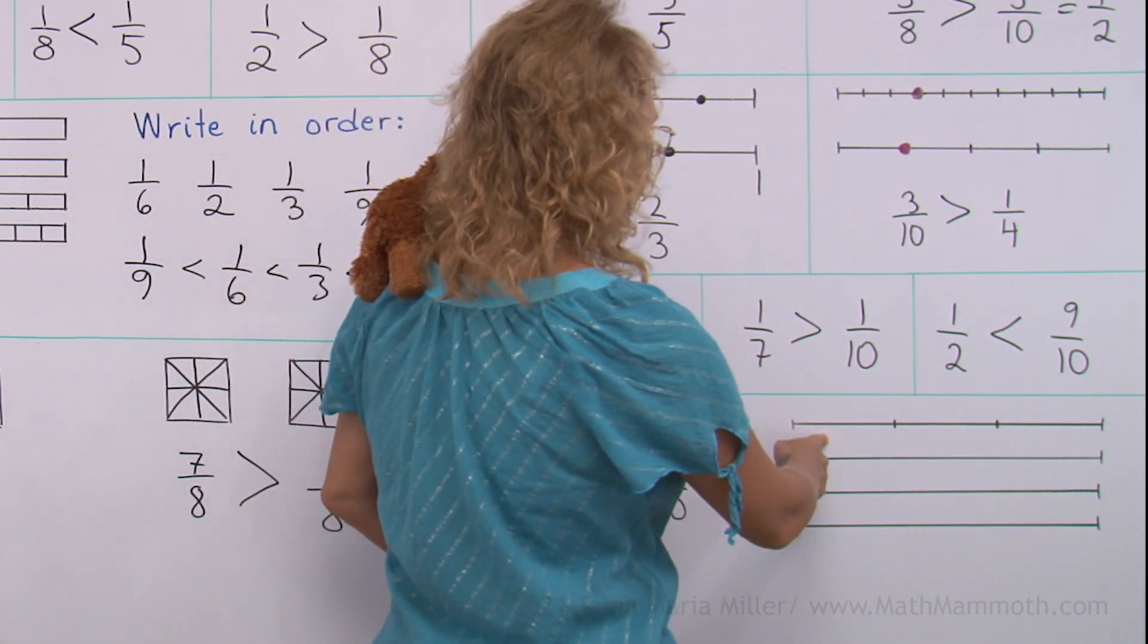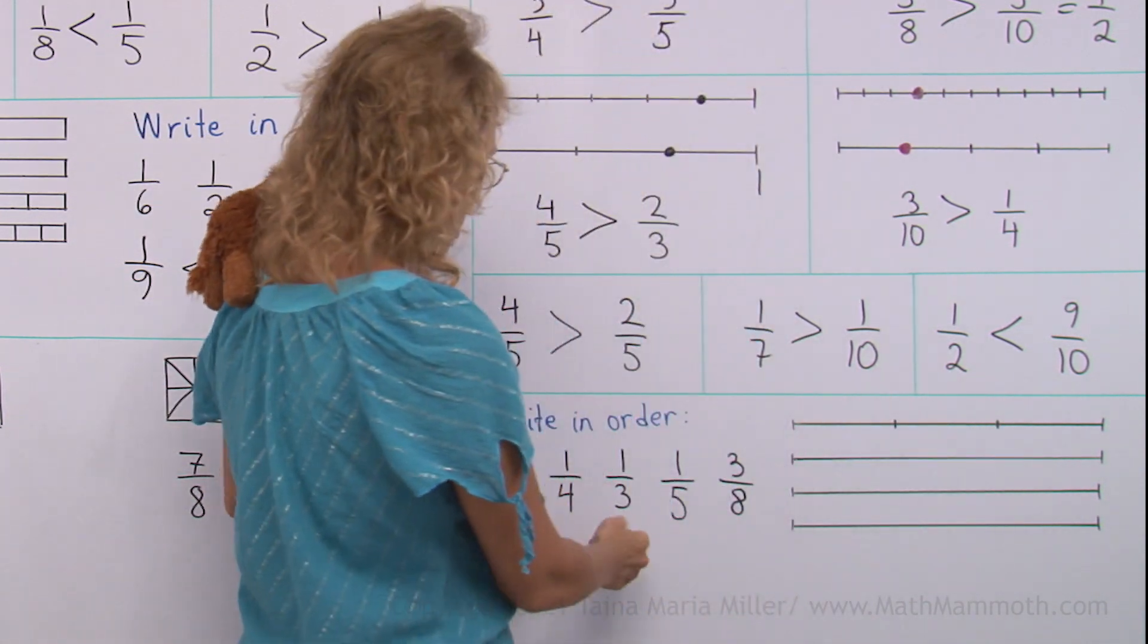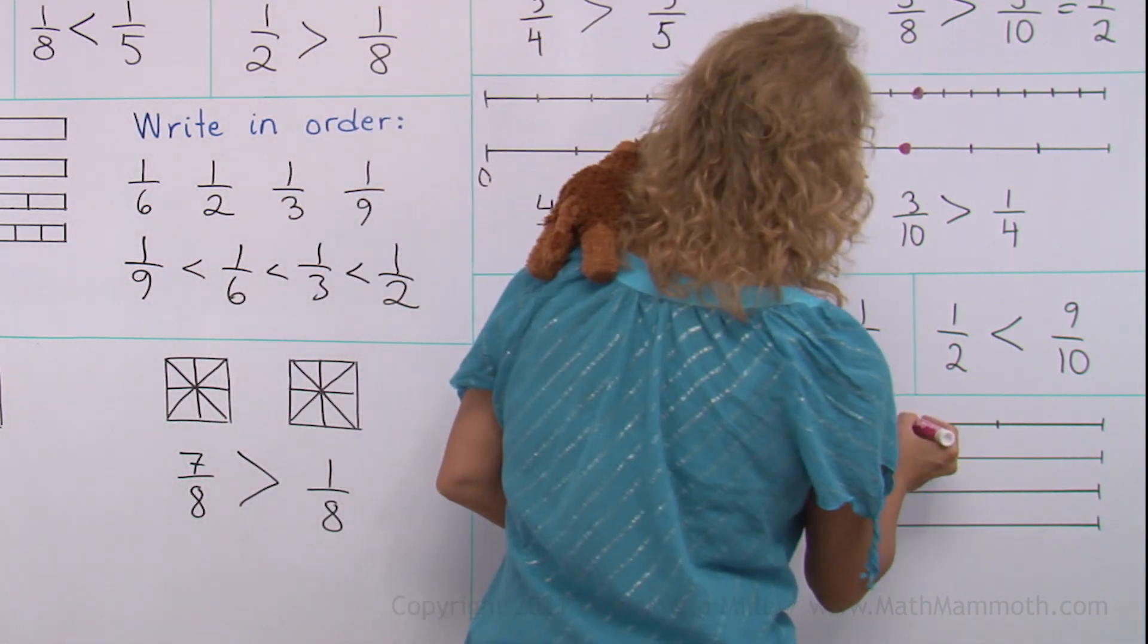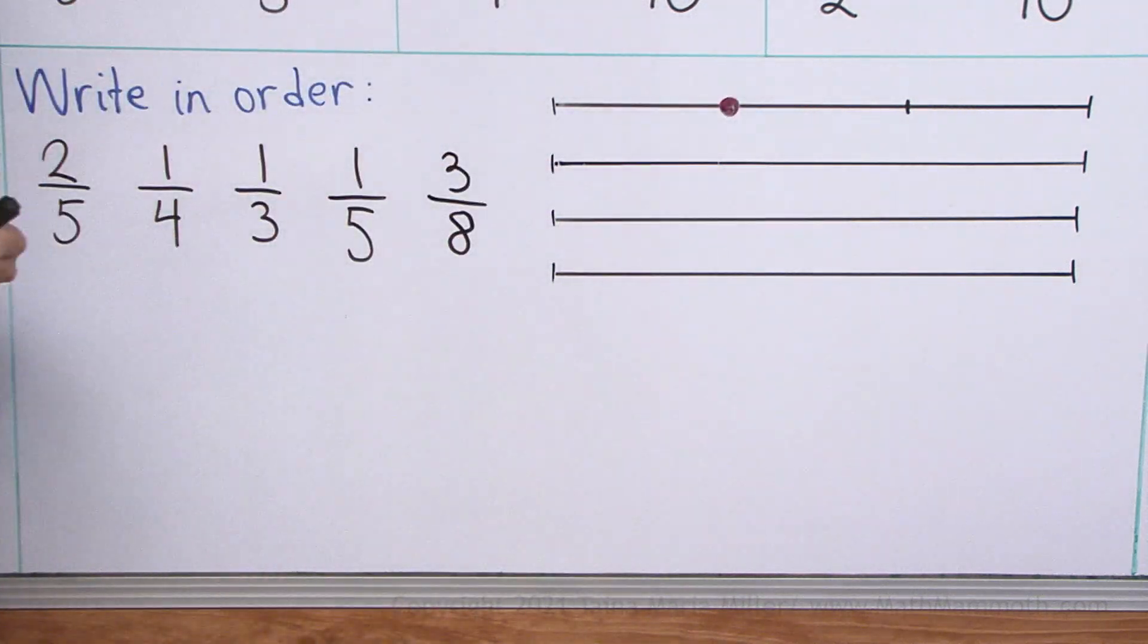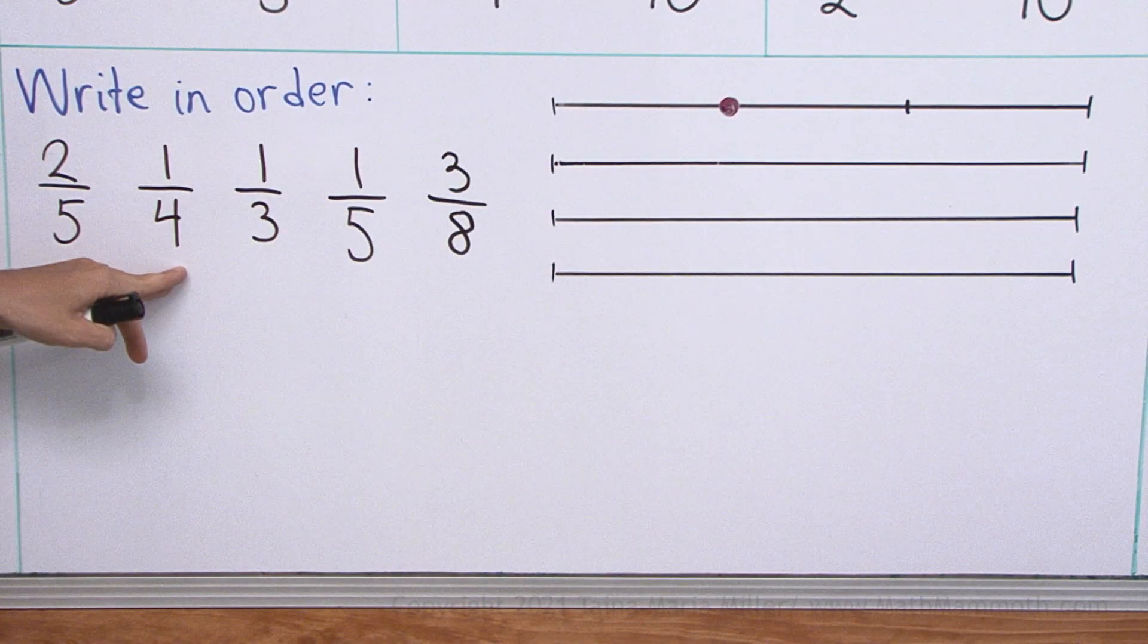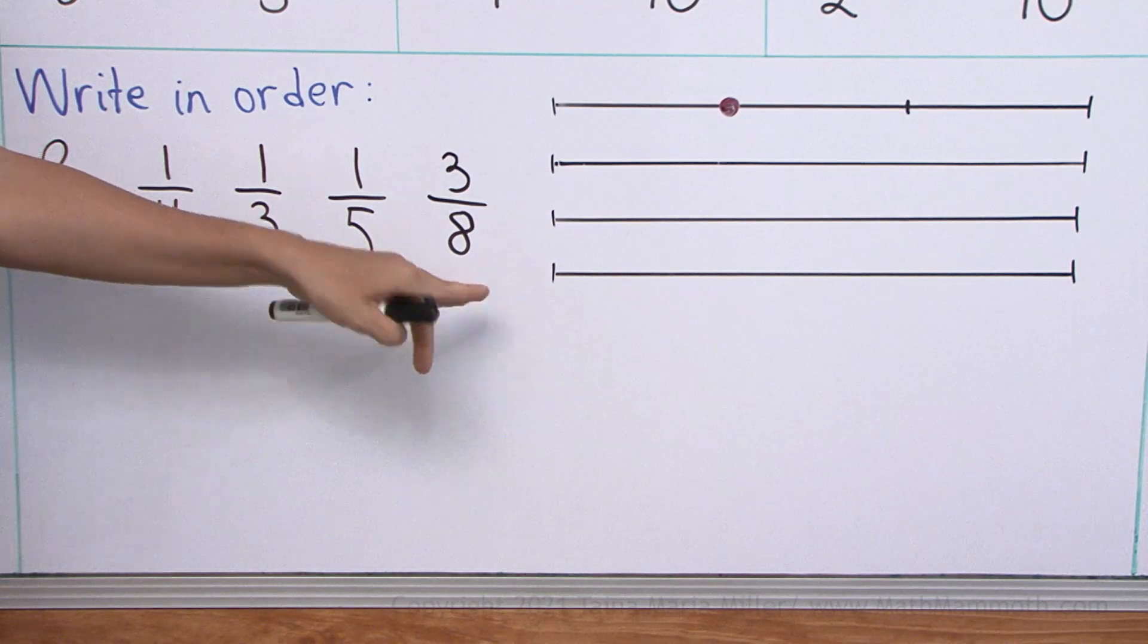This first one is divided into thirds, right? And we have one-third here, would be here. What else would we need? One divided into fourths, fifths and eighths.